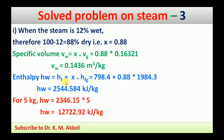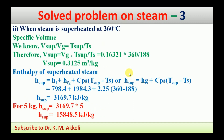The enthalpy of wet steam is h_w = h_f + x × h_fg = 798.4 + 0.88 × 1984.3 = 2544.584 kJ/kg. This is for 1 kg of steam. For 5 kg, the total enthalpy is 2544.584 × 5 = 12722.92 kJ. Note that specific volume is always per unit mass, so it is not multiplied by mass.